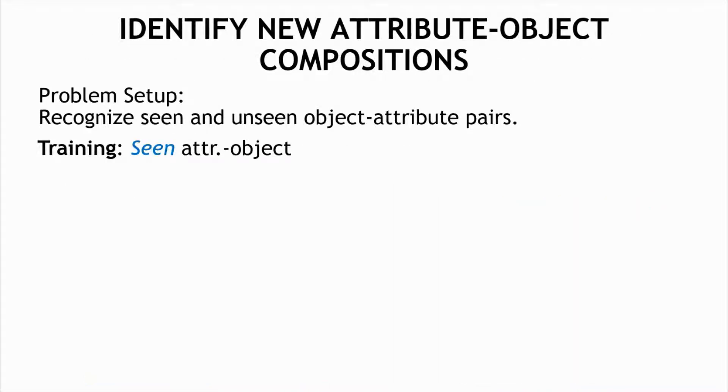More formally, in this work, we specifically focus on recognizing new combinations of attributes and objects. So for example, at training time, we see examples of white cauliflowers and red tomatoes.